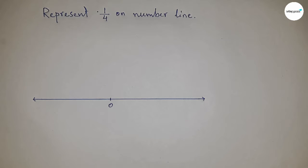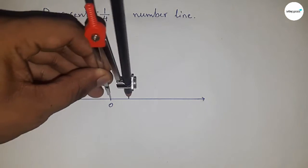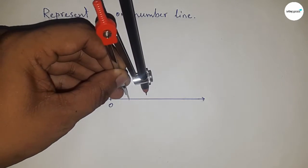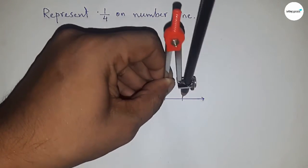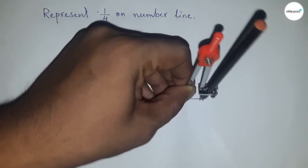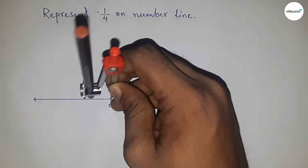Zero. Now next, we have to mark the numbers on the line. So take any length by compass and mark the numbers on the line this way. All lengths are equal, and this type of length is called...